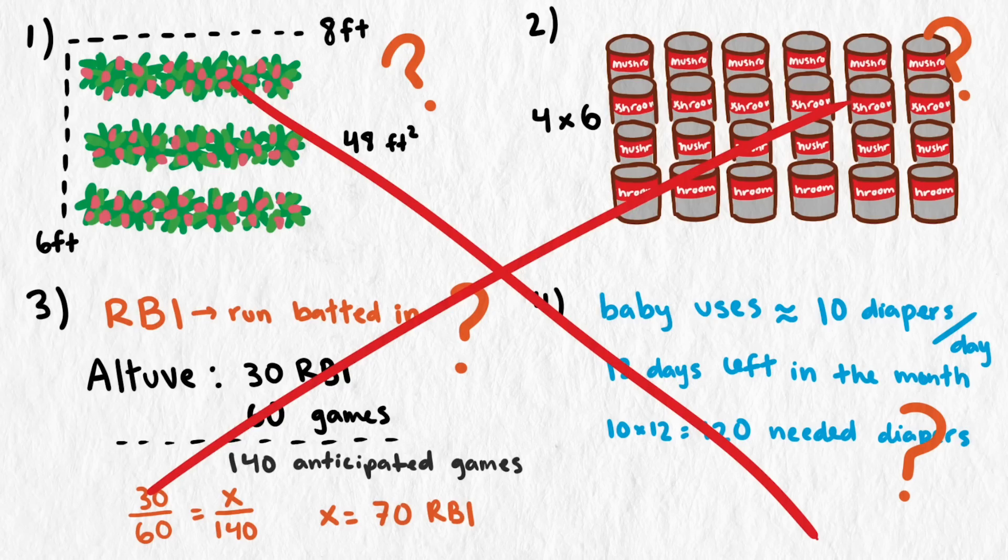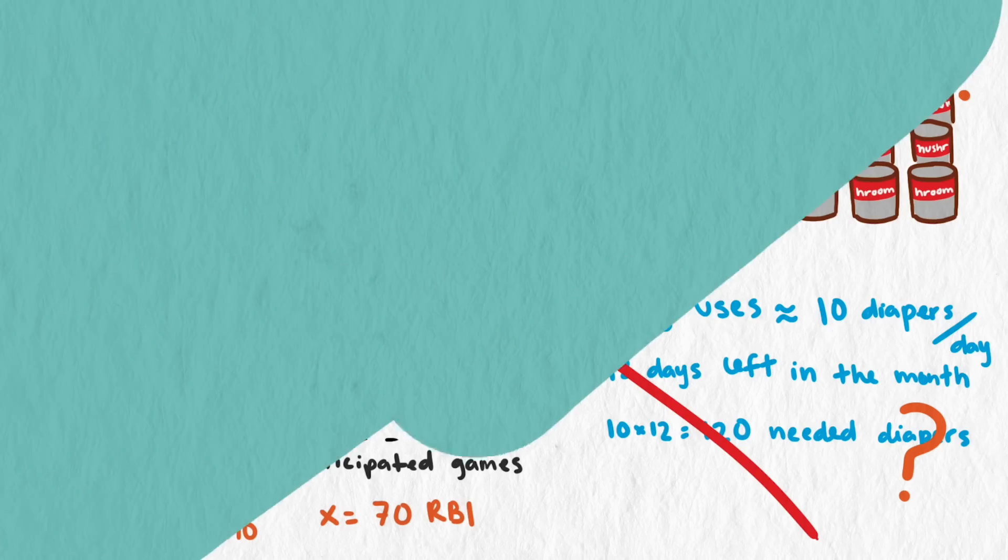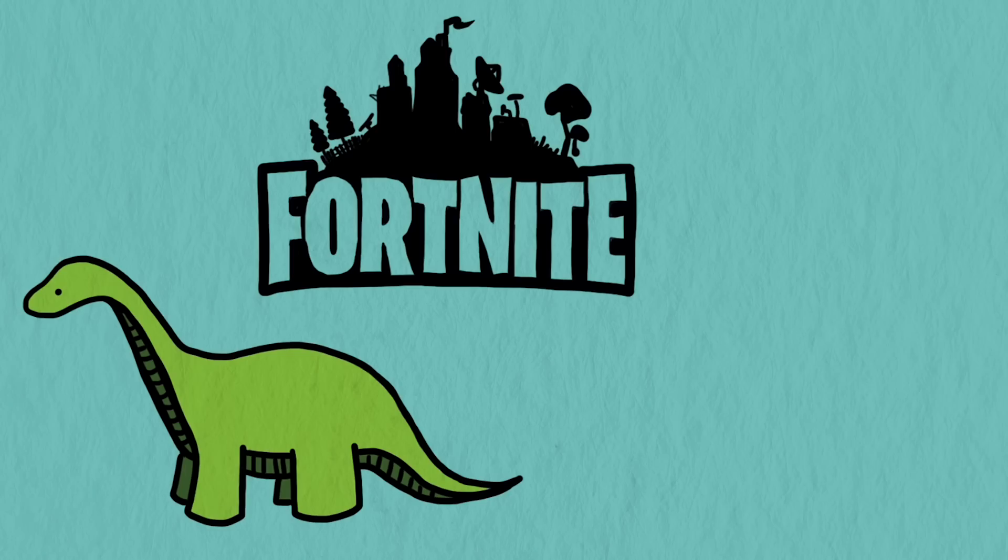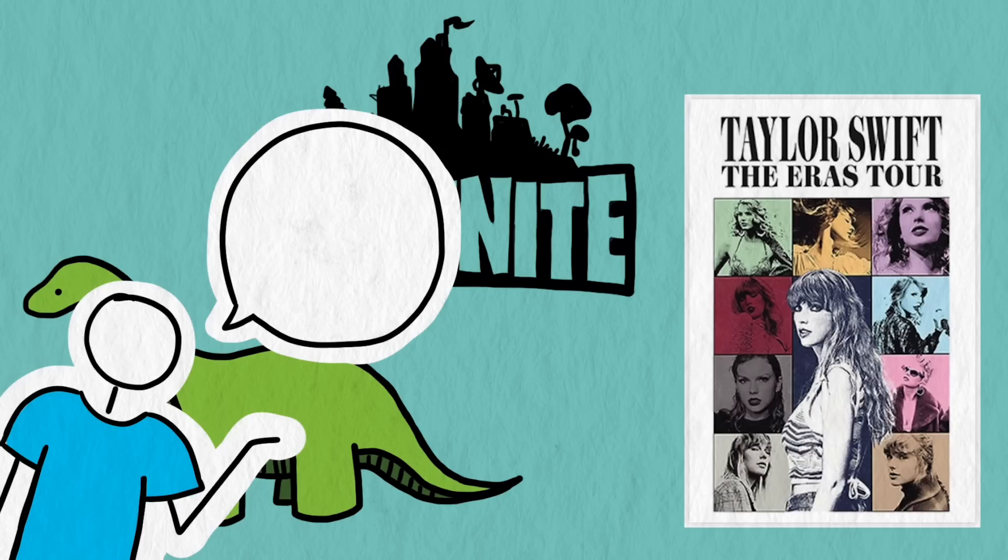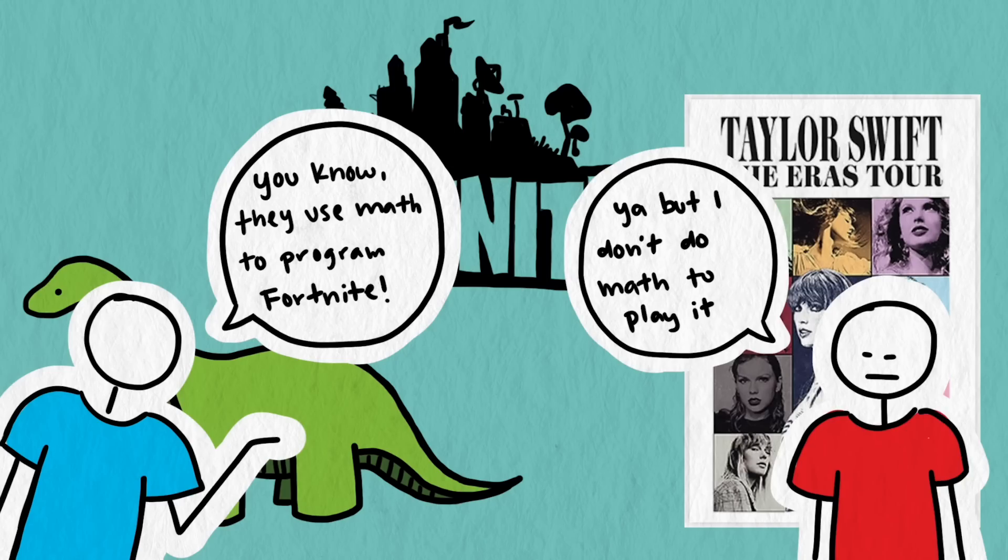Many people think the way to get students excited about math is to connect the math to interests of the kids. But this can be difficult to do well and can easily backfire. If a student has been engaged in a hobby and hasn't had to do math, it's hard to convince them that they should learn math for that hobby.